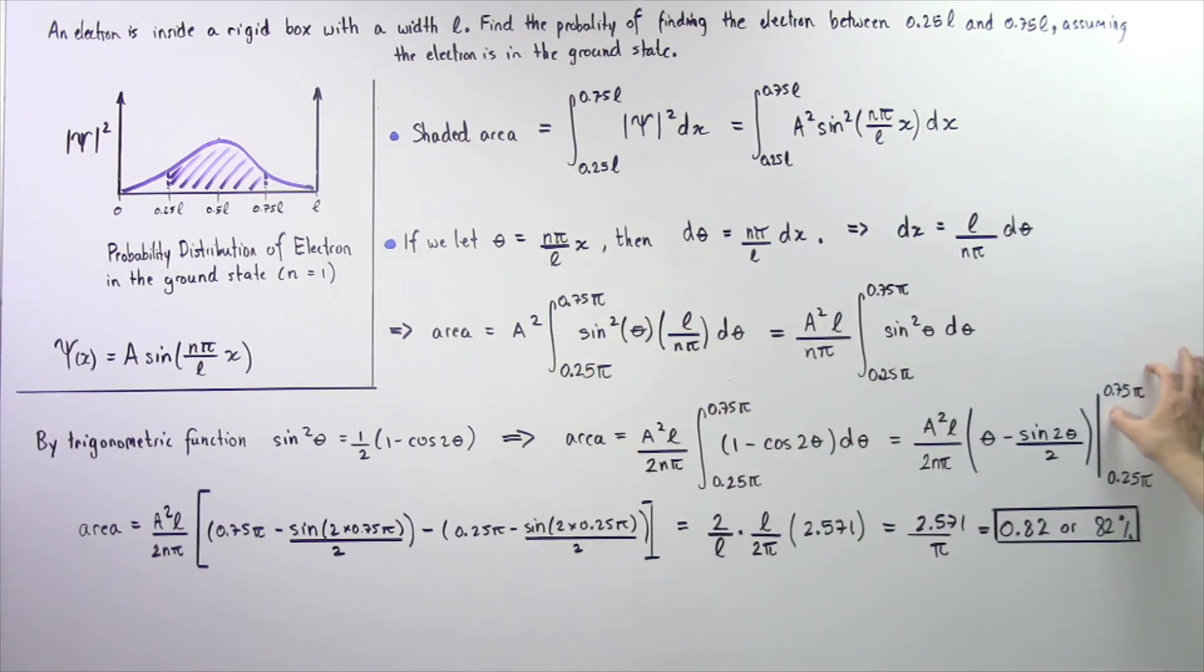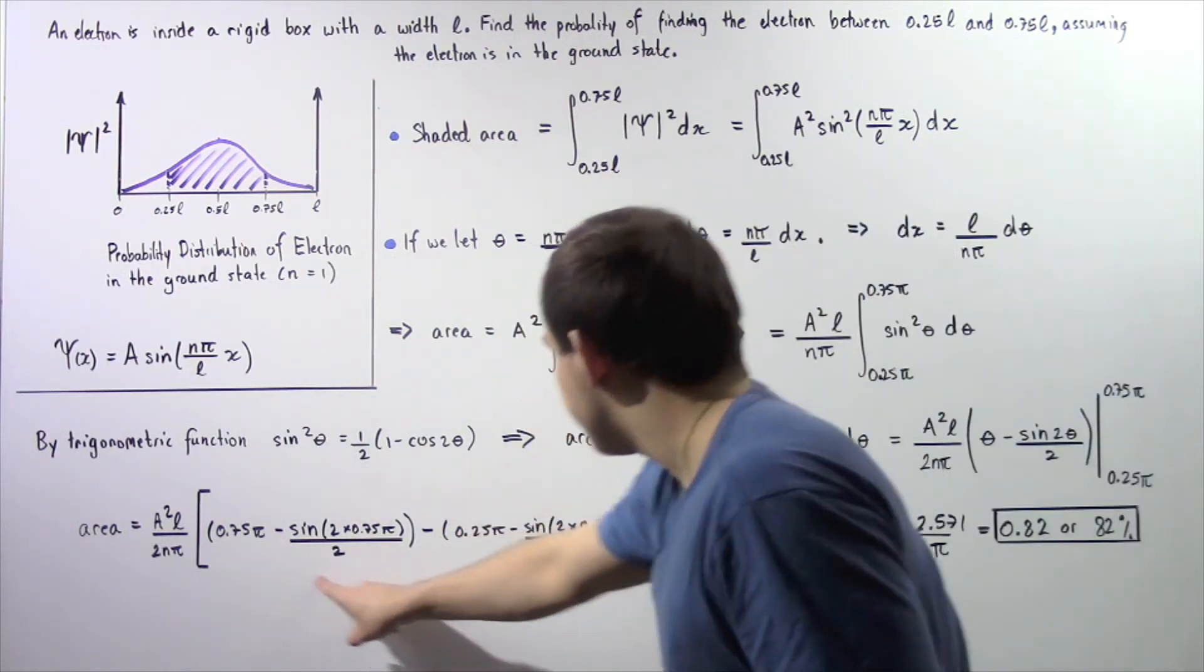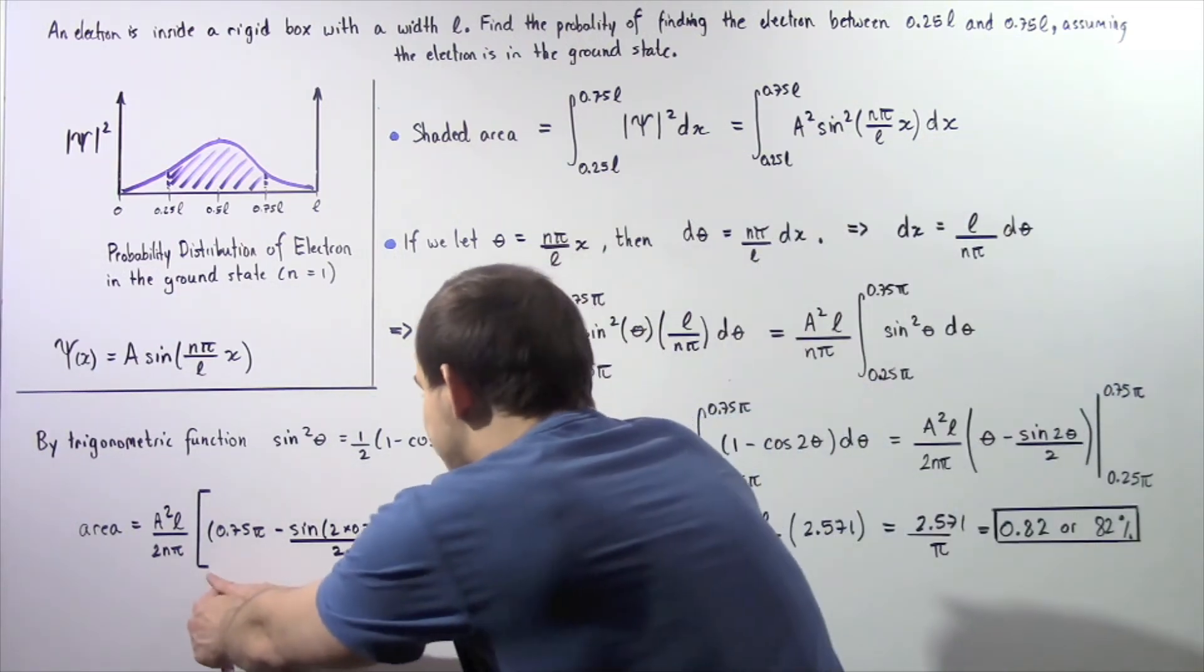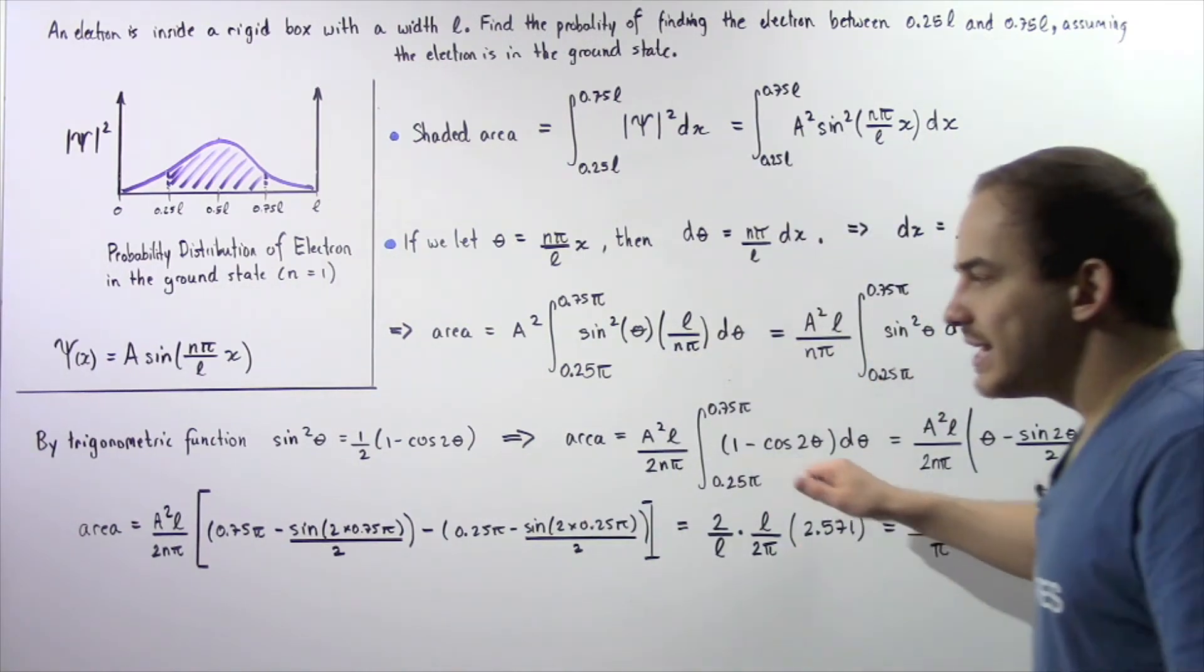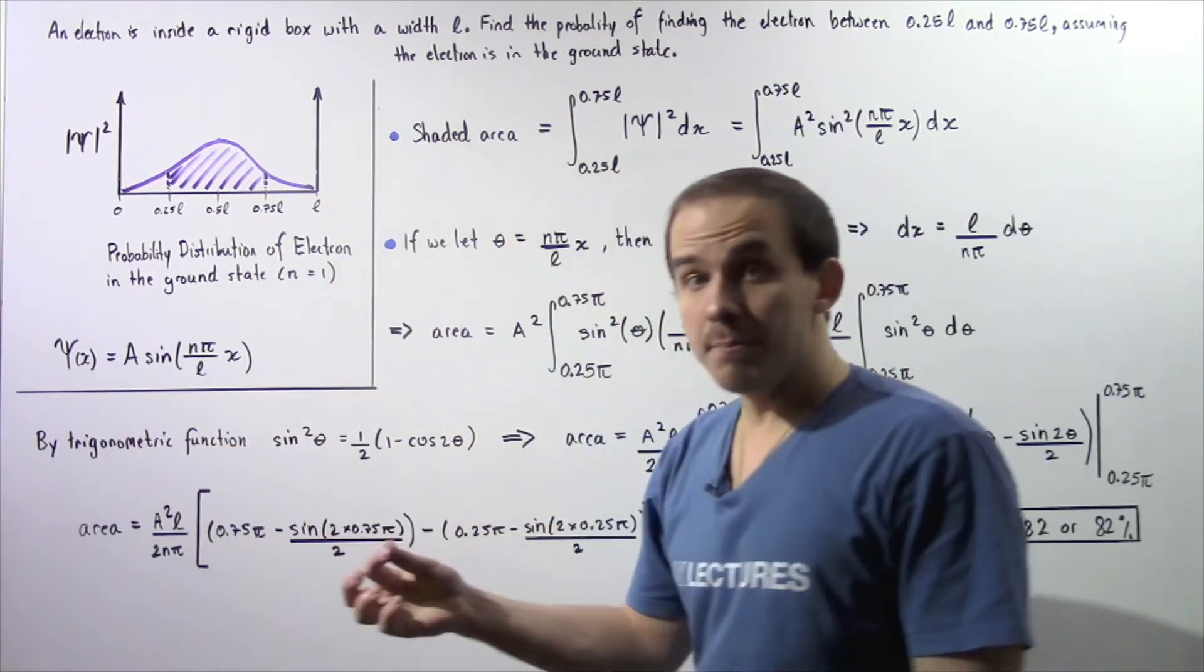If we actually evaluate the integral, we get the following result. And if we calculate this, we get 2.571. Now notice A, the amplitude...